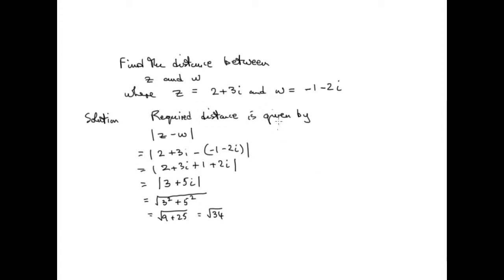It wouldn't have made any difference whether we did w minus z and found that modulus. Any negatives would just be wiped out by the squaring process, so we'd get exactly the same answer: square root of 34.